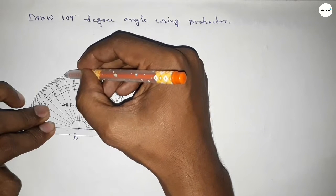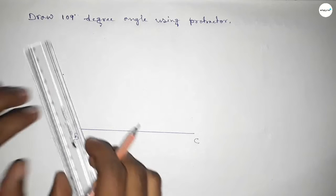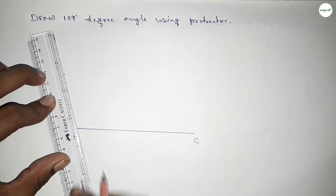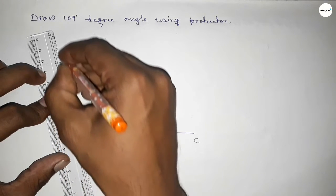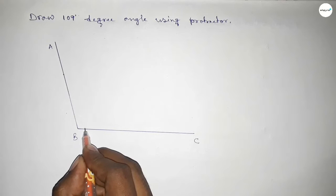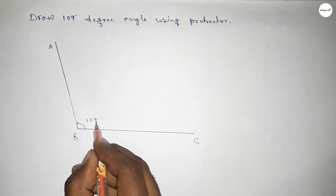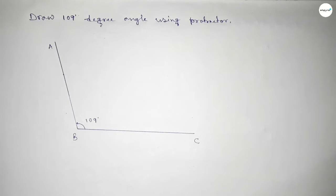Now joining this side to get 109 degree angle. So we got 109 degree angle and taking here point A. So angle ABC, this is 109 degree angle.